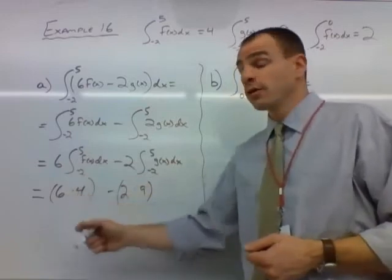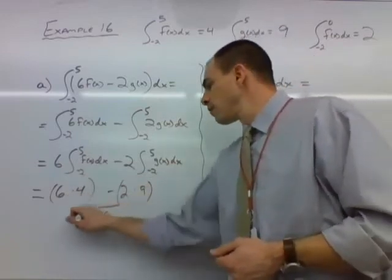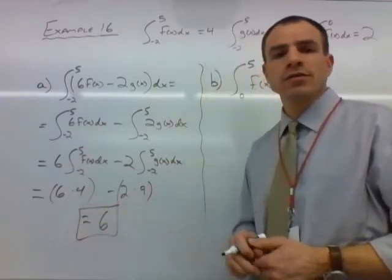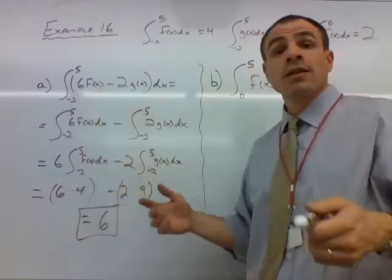6 times 4 is 24. 2 times 9 is 18. So that works out to be 6. 24 minus 18 is 6.